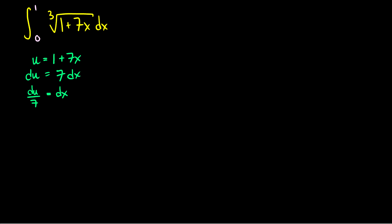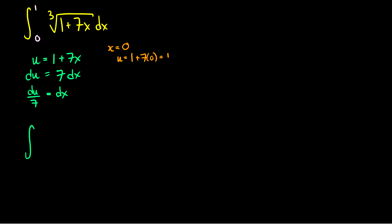So we get du over 7 equals dx. Now we can do some substitution — but wait, this isn't 0 to 1 anymore. We also have to run our limits of integration through the function u equals 1 plus 7x. If x equals 0, then u equals 1 plus 7 times 0, which is 1. So the lower limit is now 1. If x equals 1, then u equals 1 plus 7 times 1, which is 8. Therefore our new limits of integration are from 1 to 8.